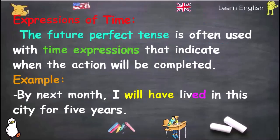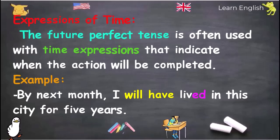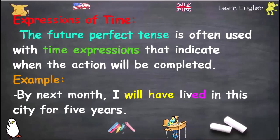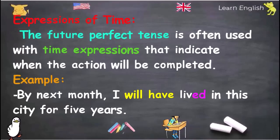Expressions of Time: The Future Perfect Tense is often used with time expressions that indicate when the action will be completed. Example: 'By next month, I will have lived in this city for five years.'